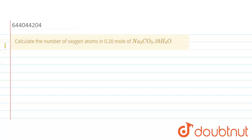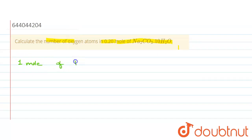The question says: calculate the number of oxygen atoms in 0.2 mole of Na2CO3·10H2O. We will do this question with the help of the unitary method. We can observe that in one mole of Na2CO3·10H2O, there are three oxygen atoms in CO3 and ten oxygen atoms in 10H2O.